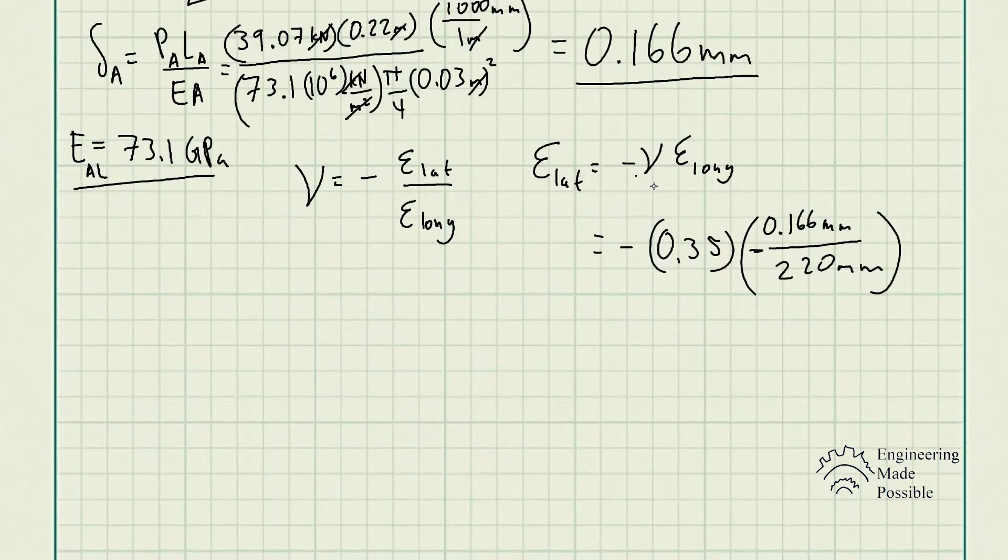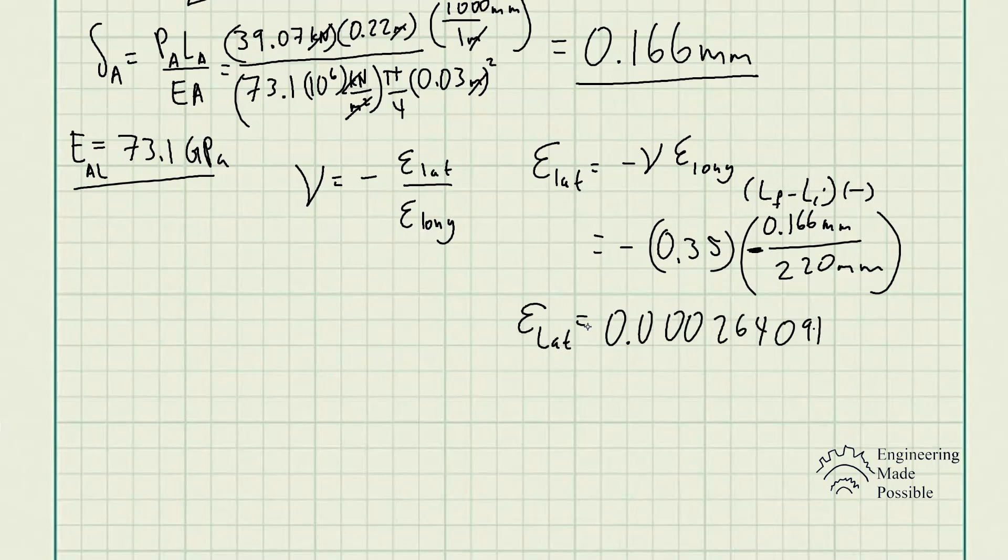The lateral strain is equivalent to negative Poisson's ratio times the longitudinal strain. We know Poisson's ratio is 0.35. The change in length is 0.166 millimeters. But since it contracted or shrunk, the final length was smaller than the initial length. Since we do final minus initial, this value gives us a negative sign. Divided by the original length of 220 millimeters. The negatives cancel out, and we get the lateral strain equal to 0.000264091.